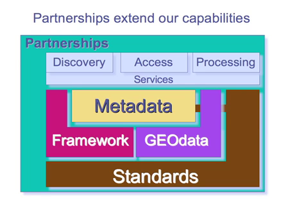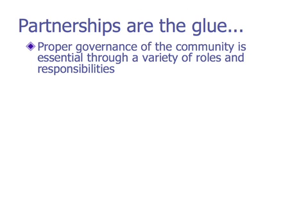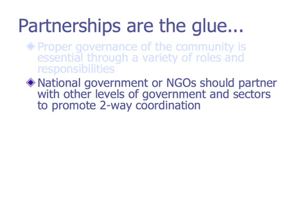Partnerships extend our capabilities — they are the glue that holds all these parts together. Without agreement on publishing data, consuming data, sharing it, redistributing it, and reserving rights and ownership, the SDI wouldn't be successful. Proper governance of the community is essential through a variety of roles and responsibilities. We expect that national governments or NGOs would partner with other levels of government and sectors to promote two-way coordination. In most countries, multiple levels of government collaborate to acquire and standardize geospatial information, and it's important to involve the private sector, the public sector, universities, and others.